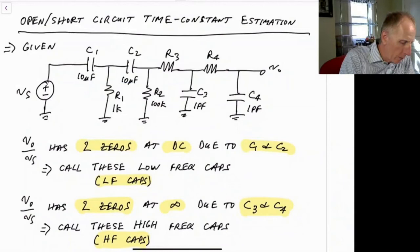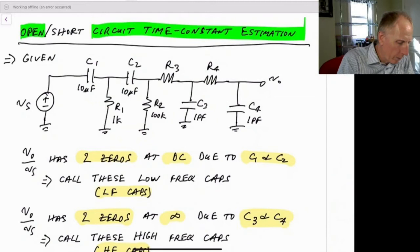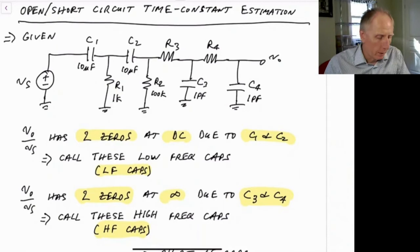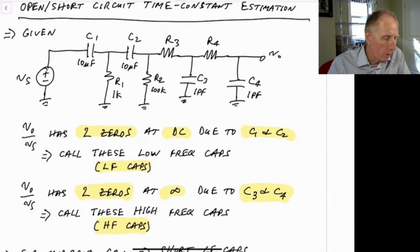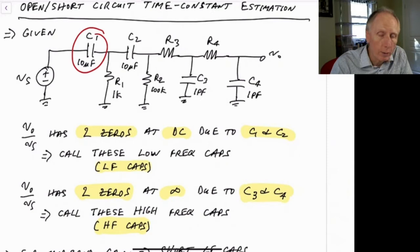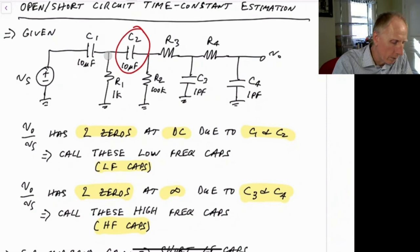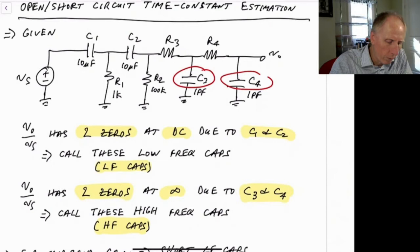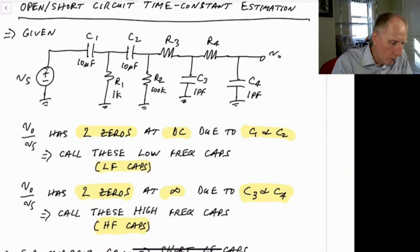Let's get to an example and see how this works. We're going to be looking at open circuit time constant estimation as well as short circuit time constant estimation. We'll start with a system that has a couple of low frequency cutoff elements. This capacitor causes a zero at DC, so it's a low frequency cutoff, and this one also causes a zero at DC. In addition, we have C3 and C4, which both cause zeros at infinite frequency, so they are high frequency capacitors that cause a high frequency cutoff.